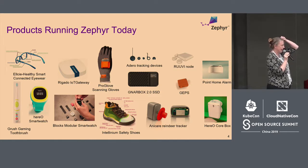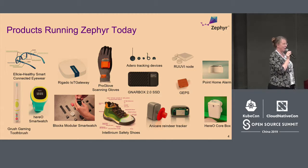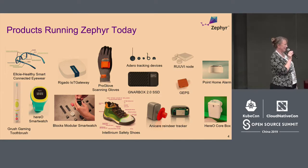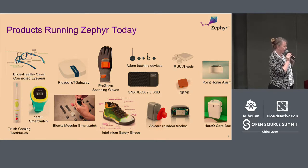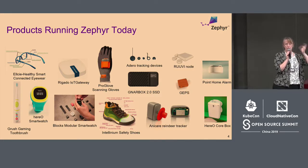Another interesting one that's come out is the AniCare Reindeer Tracker — little earrings for reindeers up in Norway for tracking the herd. On the flight over here, I was looking at a documentary about pandas in Chengdu being taken back out to the wild. They wear big radio collars, and it struck me that maybe they could have something much lighter weight to track those pandas. These types of applications in Zephyr and embedded IoT are starting to emerge. There's also the Point Home Alarm — a very small alarm with sound detection that you put in your house to detect abnormal noises like breaking glass.